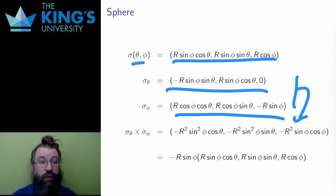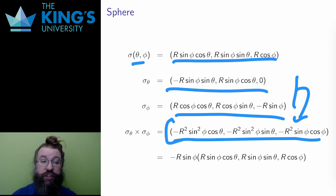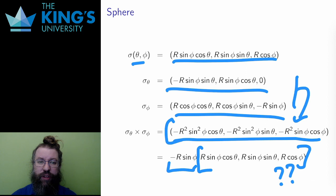I get these two vectors from those partial derivatives. Then I take the cross product, which works out to this complicated expression. There are some common factors here. I can actually factor out negative R sin(φ). And then notice what is left over. This is precisely the same as the original.